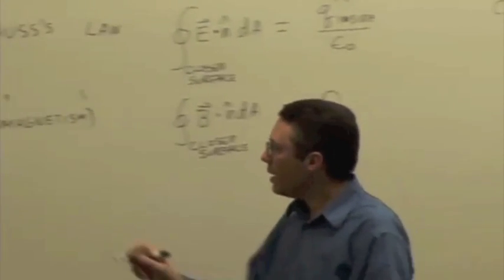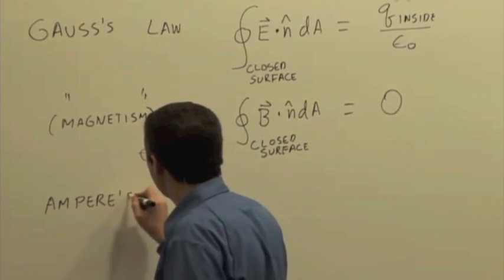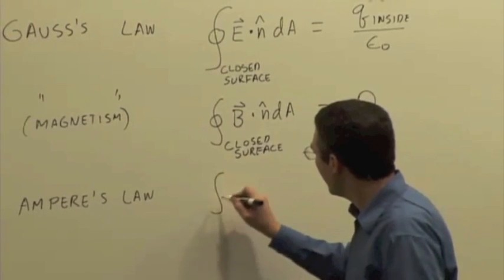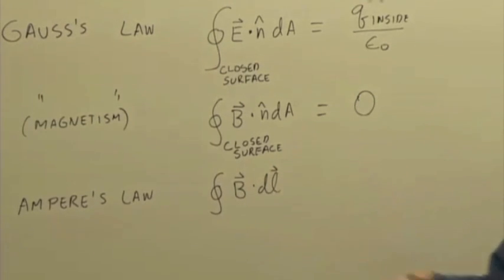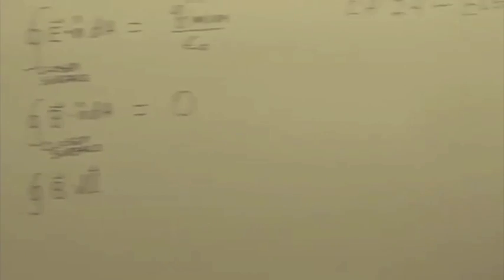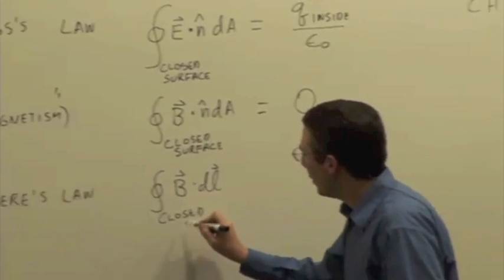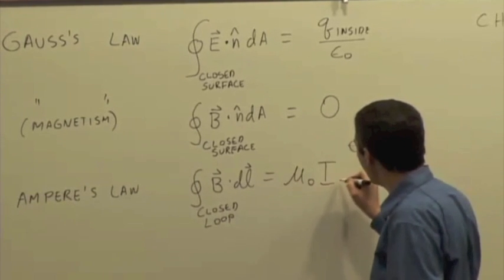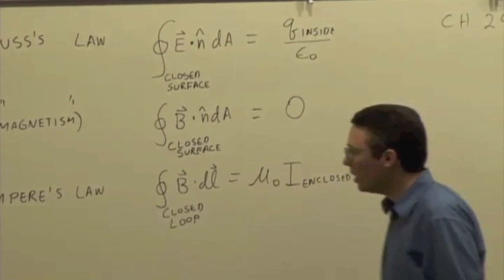We saw Ampere's law, which says that the magnetic field pattern over a closed loop, so if we're integrating not over an area but over a loop, this path integral of the magnetic field tells us about the current that's passing through that loop, so the enclosed current.